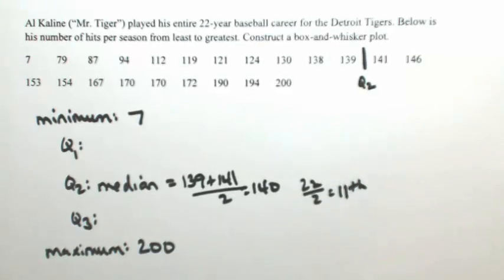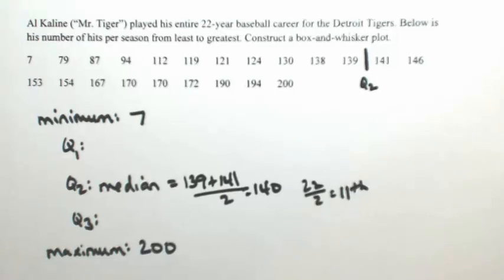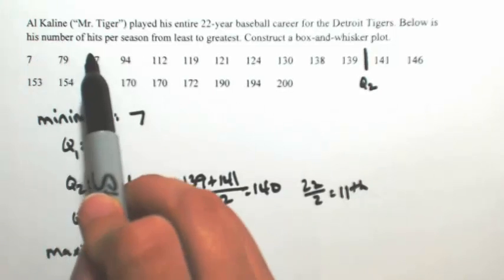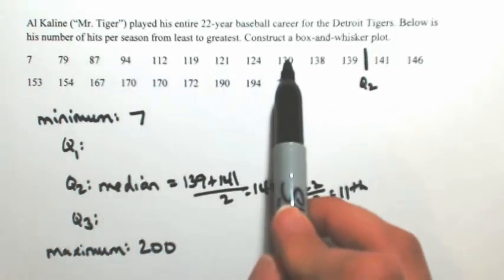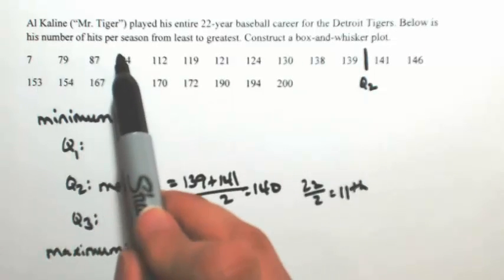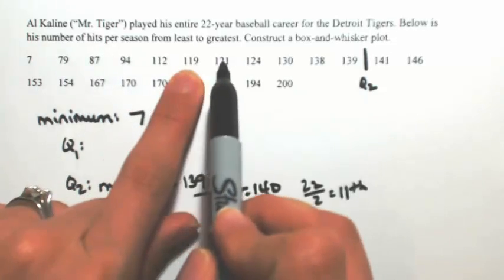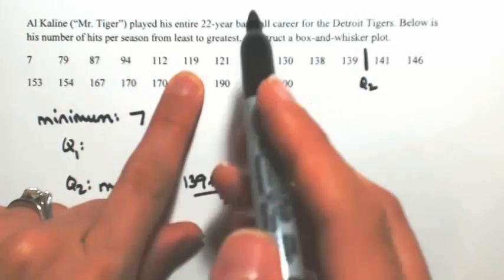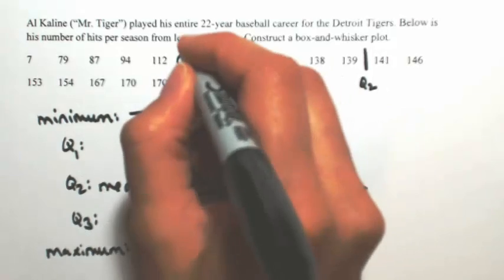To figure out Q1 and Q3, essentially we're going to find the median of the left side and the median of the right side. On the left side, we have 11 numbers. I'm going to find the median, so that's the sixth number. [Counts to 6] That 119 separates the top five from the bottom five. So 119 is Q1.